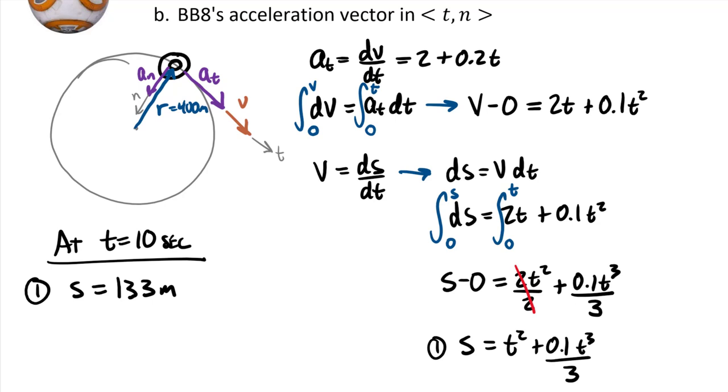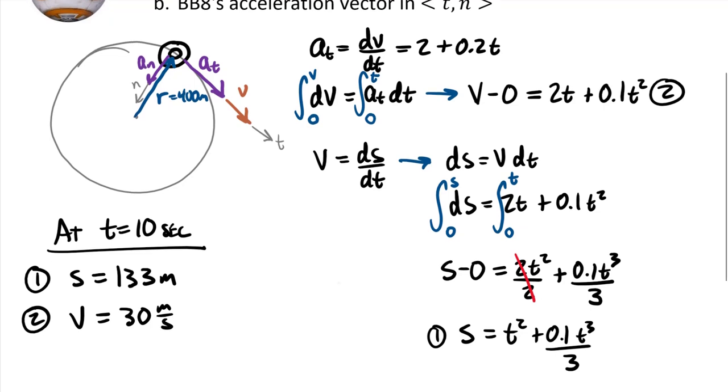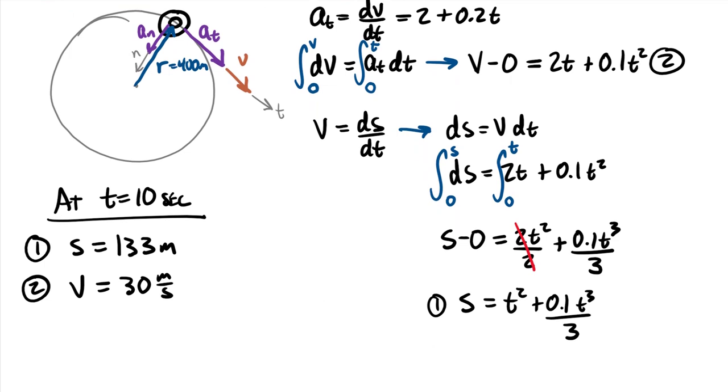And then coming out of equation 2, which is I'm going to label right here, we can find the velocity at that point. I'll talk in a second here why we need that velocity. We can find the velocity at 10 seconds. That is going to equal 30 meters per second. And the reason we need that velocity is actually for the normal acceleration.